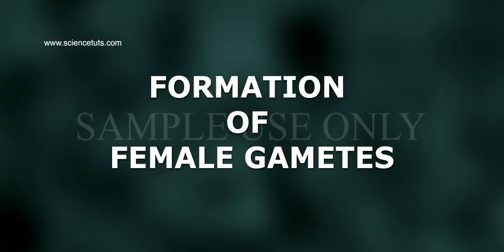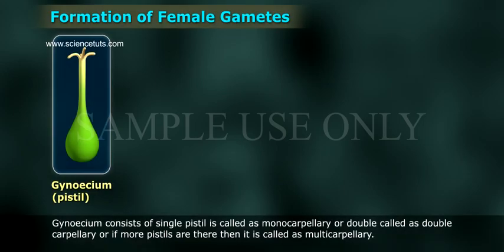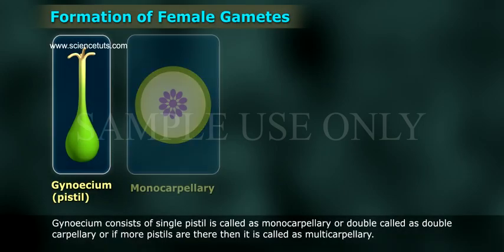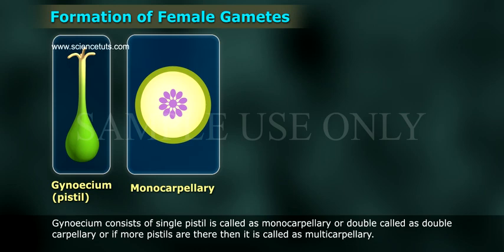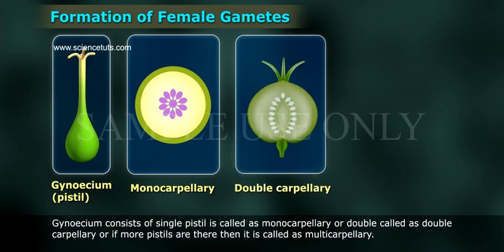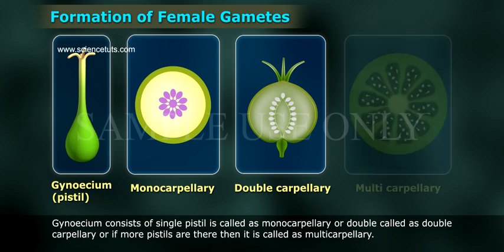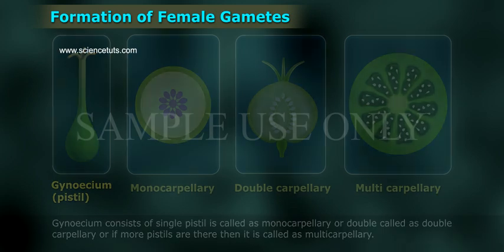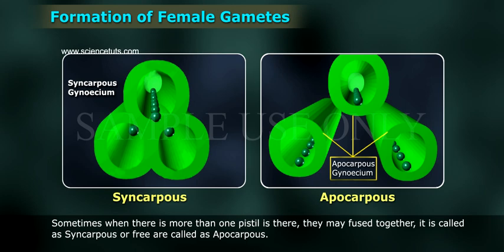Formation of Female Gametes. The gynoecium consists of a single pistil, called monocarpillary, or double, called bicarpillary, or if more pistils are there, it is called multicarpillary. Sometimes, when there is more than one pistil, they may fuse together, called syncarpous, or if free, called apocarpous.